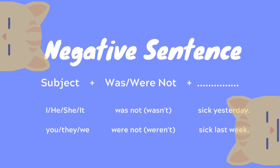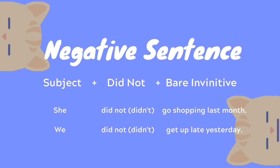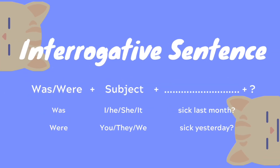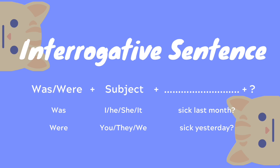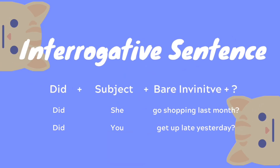For a negative sentence, the form is subject plus 'was' or 'were not' plus the rest of the sentence. There is also another alternative form for negative sentences. For an interrogative sentence, the form is 'was' or 'were' plus subject plus the rest of the sentence plus a question mark. Alternatively: 'did' plus subject plus bare infinitive plus question mark.